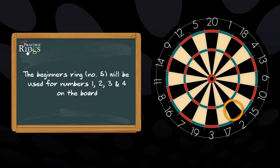The beginners ring, number five, will be used for numbers one, two, three, and four on the board.